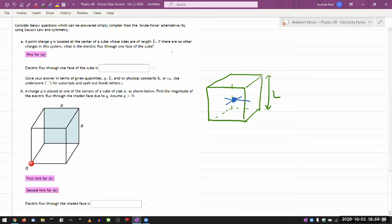It says, if there are no other charges in the system, what is the electric flux through one face of the cube? So if you want to do this the brute force way, that's going to be challenging. Because your electric field at different points on the surface are at different distances, they are at different directions. So when you work out the dot product with a normal vector, it's all complicated. So you don't want to do it that way. The way you want to do it is see what kind of symmetry you can exploit.